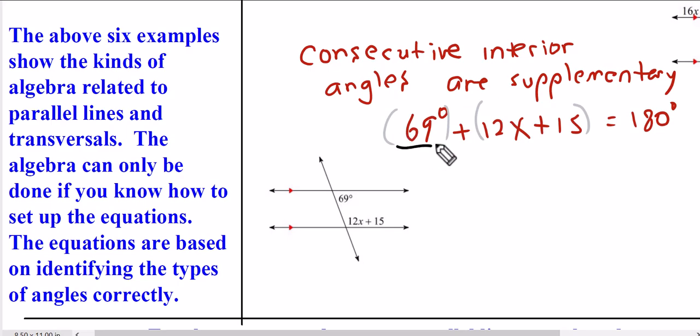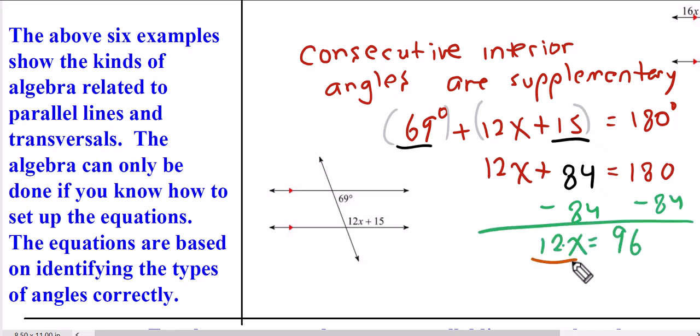We can combine like terms, subtract this from both sides, and then divide both sides by 12 to get that x equals 8. That is the value of x.